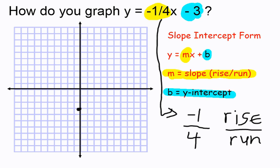And that tells me that each time I go down one, I go over four. Rise of negative one, down one, run of four means over four.